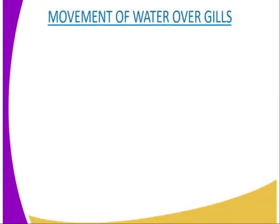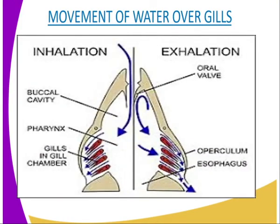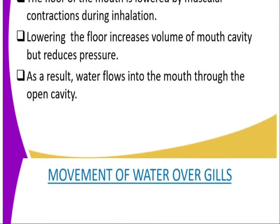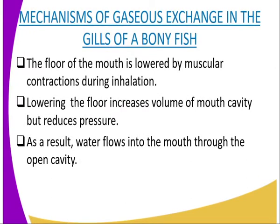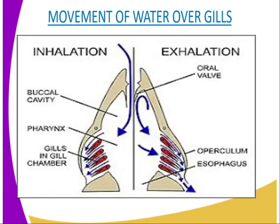As I explain, follow the diagrammatic representation on screen, showing both inhalation and exhalation. The floor of the mouth cavity is lowered by muscular contractions during inhalation. This lowering increases the volume of the mouth cavity but reduces the pressure. As a result, water flows into the mouth through the open cavity, while each closed operculum on either side bulges outwards, causing a reduction of pressure in the gill cavity so that water containing dissolved oxygen flows from the mouth cavity to the gill chamber over the gills. The higher external pressure presses the flexible free edges of each operculum against the side of the fish, so each operculum acts as a valve to ensure that water enters only through the mouth.